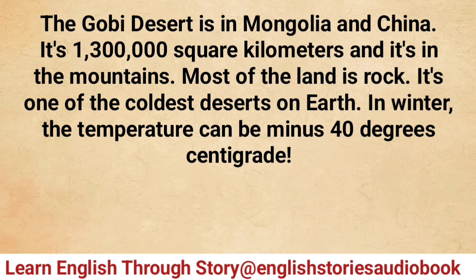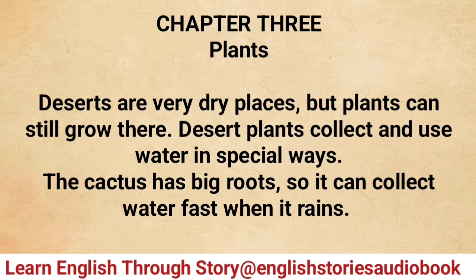The Gobi is one of the coldest deserts on Earth. In winter the temperature can be minus 40 degrees centigrade. Chapter three: Plants. Deserts are very dry places but plants can still grow there. Desert plants collect and use water in special ways. The cactus has big roots so it can collect water fast when it rains.